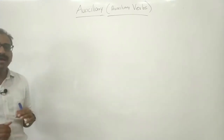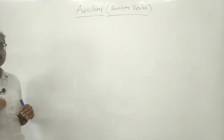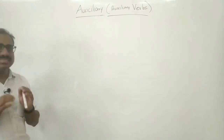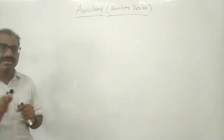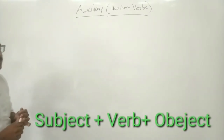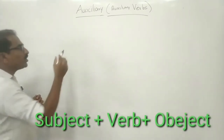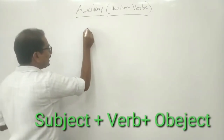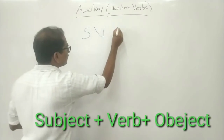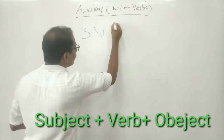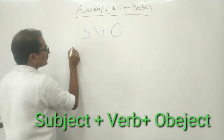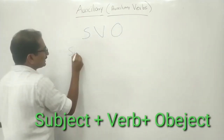Then, how will the pattern of a sentence in English be? The pattern of a sentence in English will be in S-V-O pattern — subject, verb, object. Subject will be at the beginning, followed by the verb, then the object.